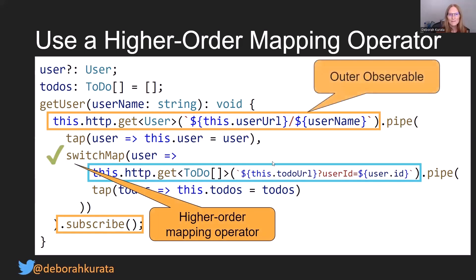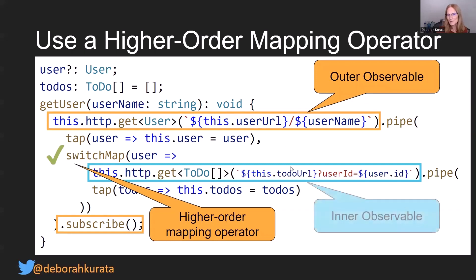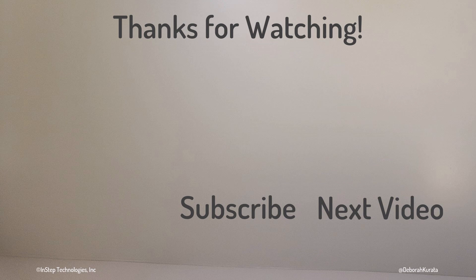Just a little terminology here — this confused me when I first read it in the documentation. When you look at it on a picture, it's kind of obvious that that's the inner observable inside, and this is the outer observable on the outside. But when you're just reading it in the documentation, it's not as obvious.